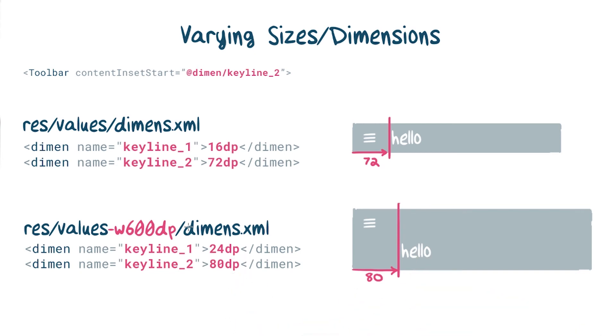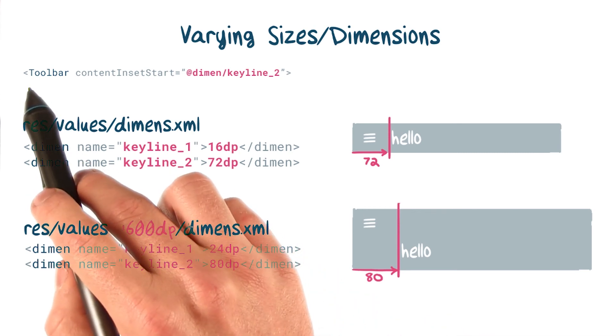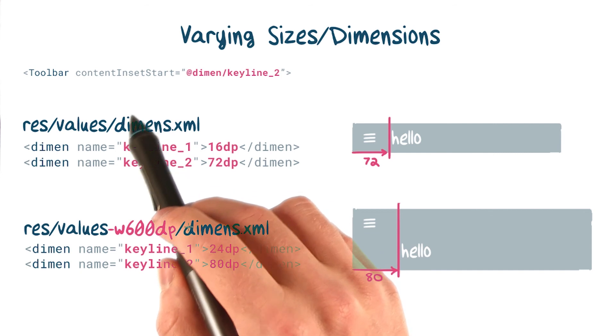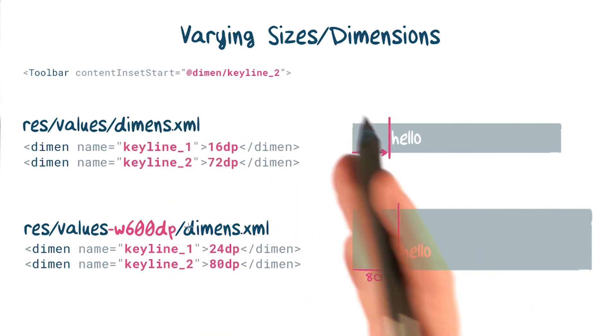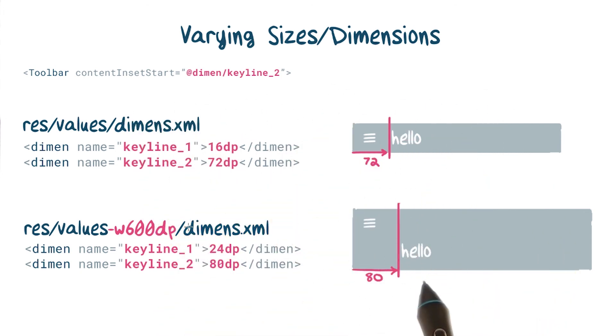This too can be done with varying dimension resources. In this example, we're telling the toolbar to inset the title from the left edge of the screen to the second key line. So we're going to inset it by 72 or 80 dip, depending on which device we're running on.